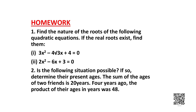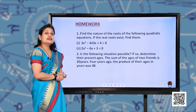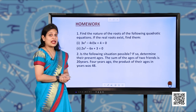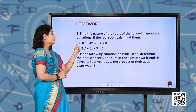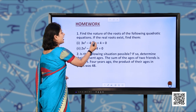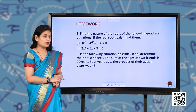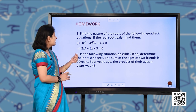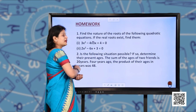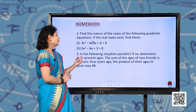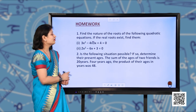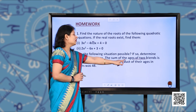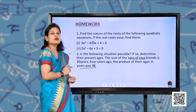Now there are a few questions for your homework. First: find the nature of the roots of the following quadratic equations; if real roots exist, find them. Part 1: 3x² minus 4√3 x plus 4 = 0. Part 2: 2x² minus 6x plus 3 = 0. Second question: is the following situation possible? The sum of the ages of 2 friends is 20 years; 4 years ago the product of their ages was 48.